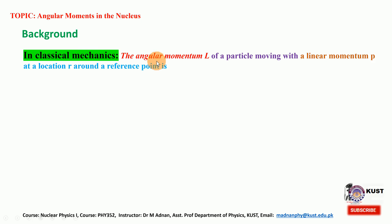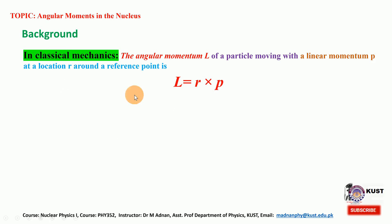In classical mechanics, the angular momentum L of a particle moving with linear momentum P at a location R around a reference point is given by vector L = vector R cross vector P, where R is the position, P is the linear momentum, and L is the angular momentum. Angular momentum plays a central role in both classical mechanics and we will also discuss the quantum version in this lecture.